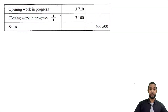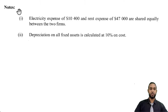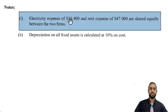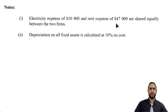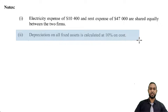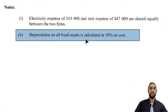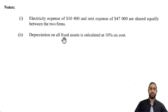There's one more set of information just below this. We have some additional notes. The first note tells us that electricity expense of $10,004 and rent expense of $47,000 are shared equally between the two firms. So these two items were not presented in the list of balances above, so we're going to have to come back to them. The second note tells us that depreciation on all non-current assets is calculated at 10% on cost — that's the straight-line method. The word 'fixed' is used here for assets, as this was the 2013 paper, before the transition to using 'non-current' instead of 'fixed'.